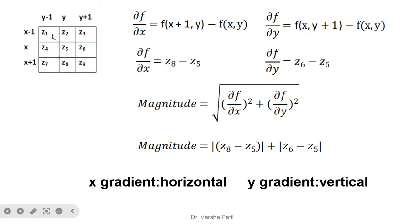Instead of taking the difference between x and x+1, we can also take the difference between x and x-1. For this region, the partial derivative with respect to x is z8 minus z5, and for the partial derivative with respect to y it is z6 minus z5. Taking the horizontal difference finds horizontal edges, and taking the vertical difference finds vertical edges.